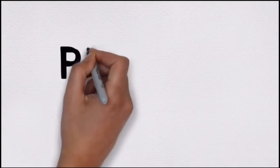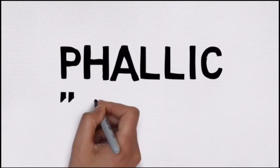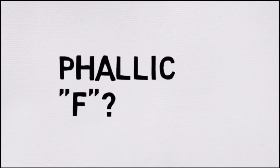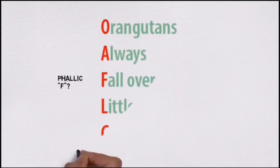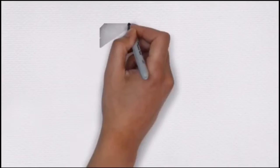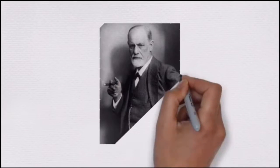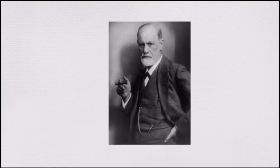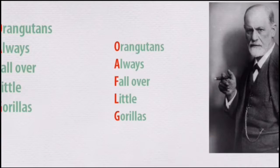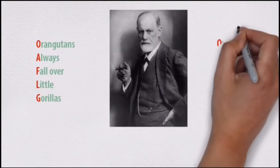Now, the letter P and the word phallic could give you a little trouble, since it sounds like phallic starts with an F. But don't let this hang you up. How about this sentence? Orangutans always fall over little gorillas. You use the word fall in your sentence to remind you of phallic. You just have to remember that you made this tiny substitution of the F with the P. This sentence should help you to remember the order of Freud's stages.